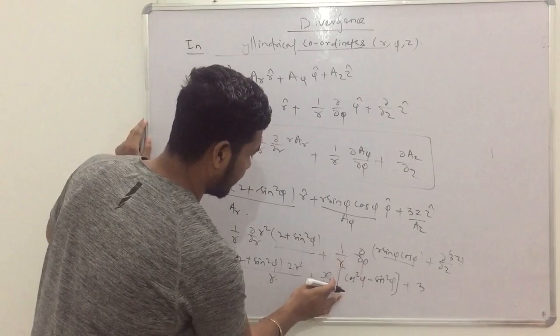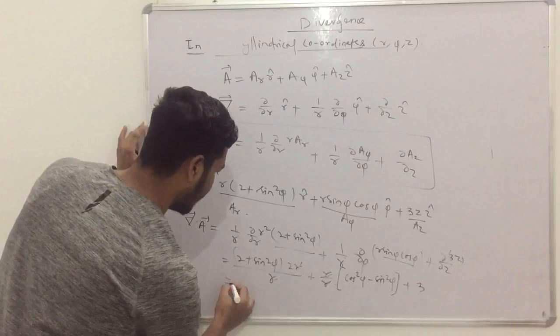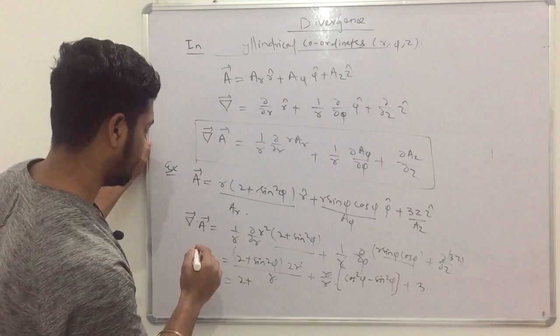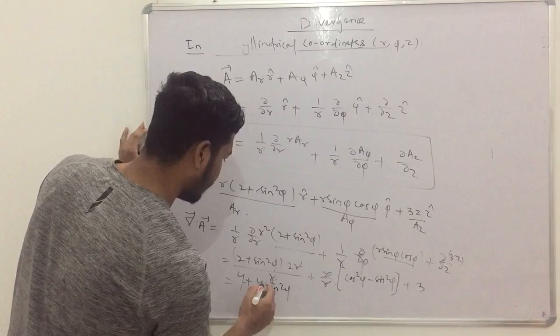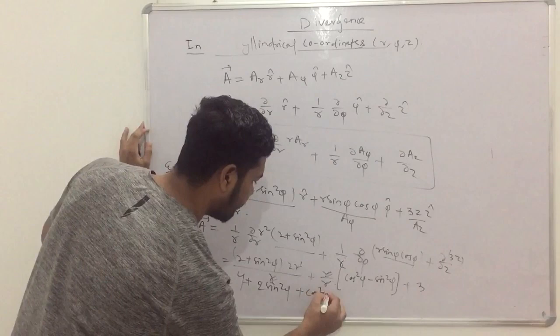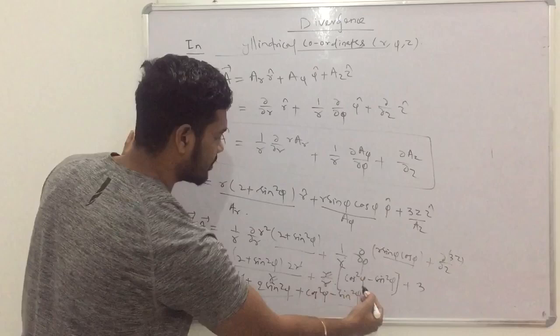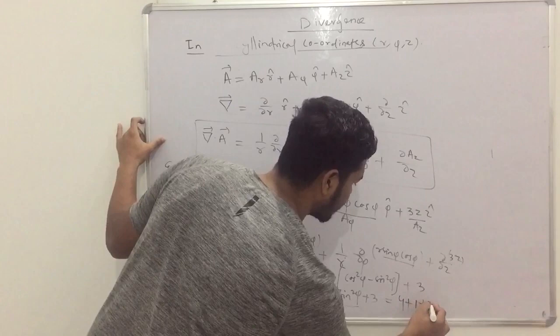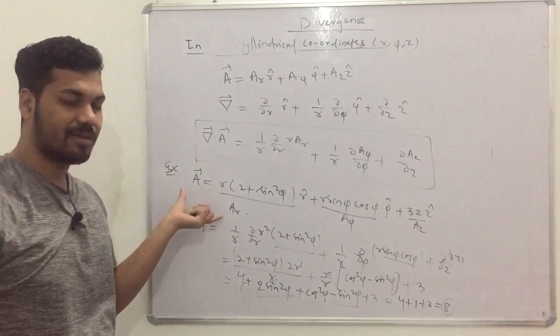Here 1/r — not 1/r² — so the r terms cancel appropriately. The remaining terms give: 2(2r² + sin²φ)/r · r simplifies to 4 + 2 sin²φ, then plus cos²φ − sin²φ, plus 3. So 2 sin²φ − sin²φ = sin²φ, and cos²φ + sin²φ = 1, giving 4 + 1 + 3 = 8. The divergence of this vector in cylindrical coordinates is 8.